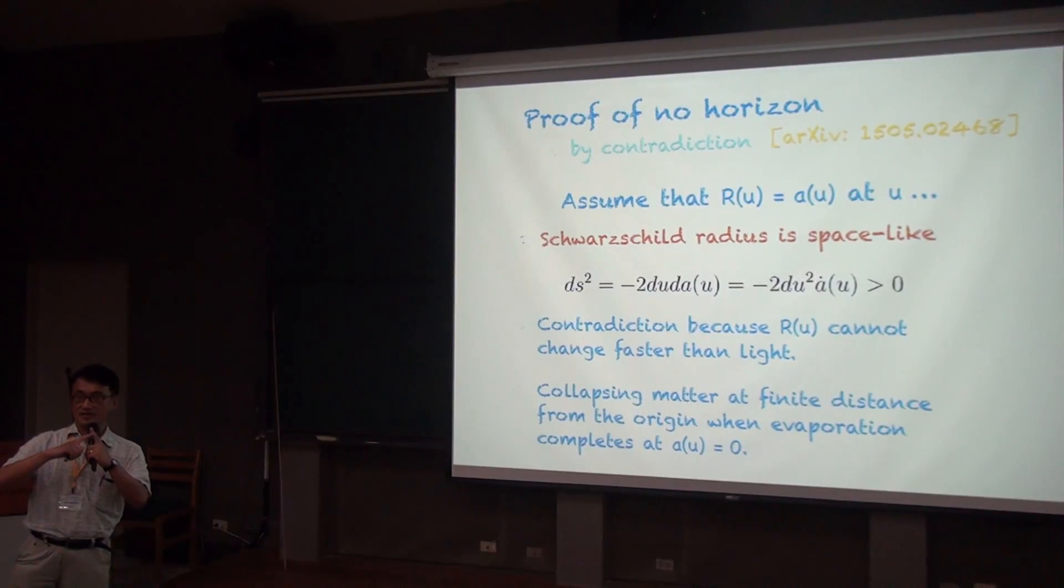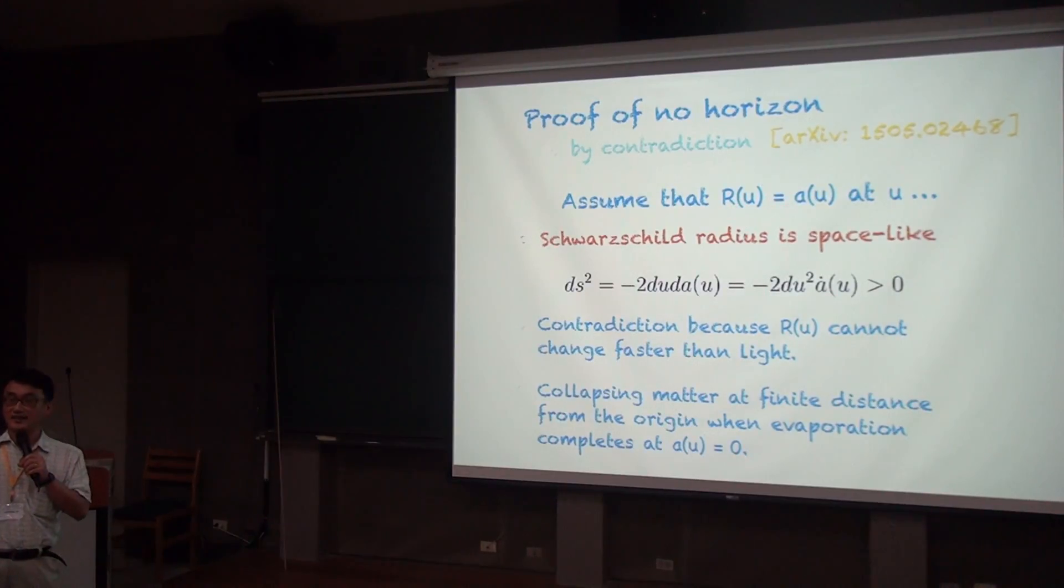And if they cross, for the horizon to appear, they have to cross, which means that from certain point U and later, little A would be larger than capital R, so that I can apply the outgoing Vaidya metric, and then this equation would make sense.